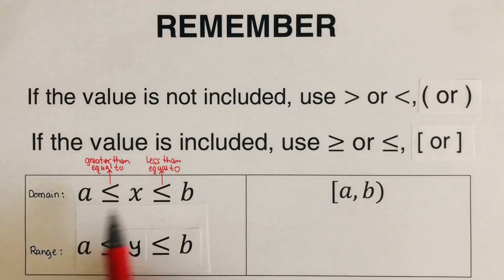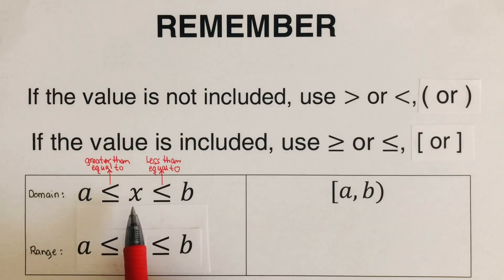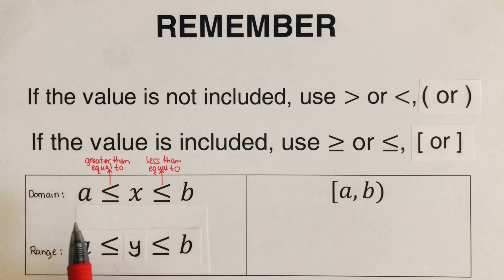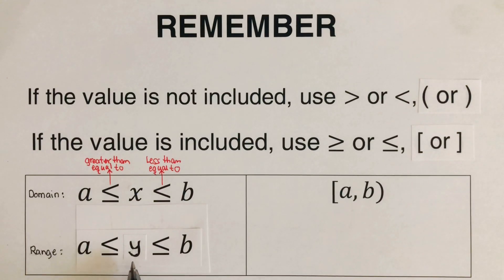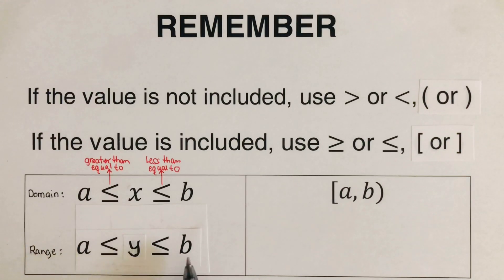For inequality notation, we remember that for domain, this is read as x is greater than or equal to a, or x is less than or equal to b, where a is the leftmost boundary and b is the rightmost boundary. For the range, we have y is greater than a, or y is less than b, where a is the lowermost boundary of the graph, and b is the uppermost boundary of the graph.